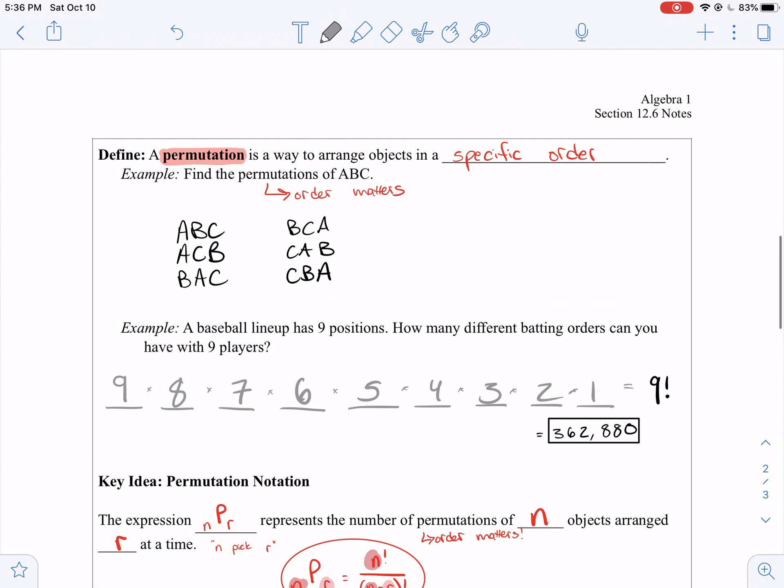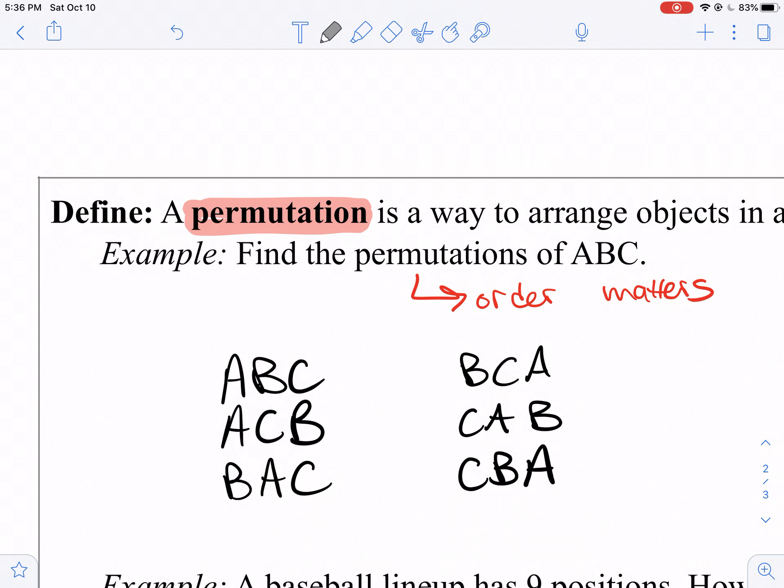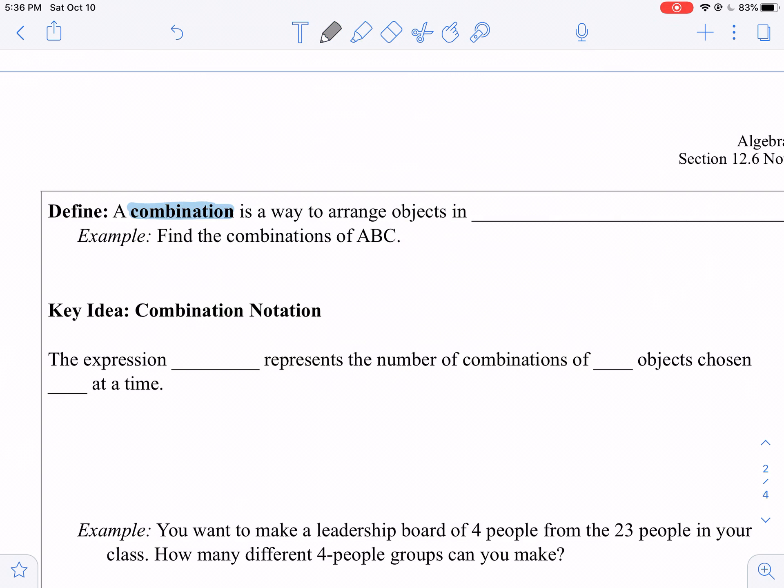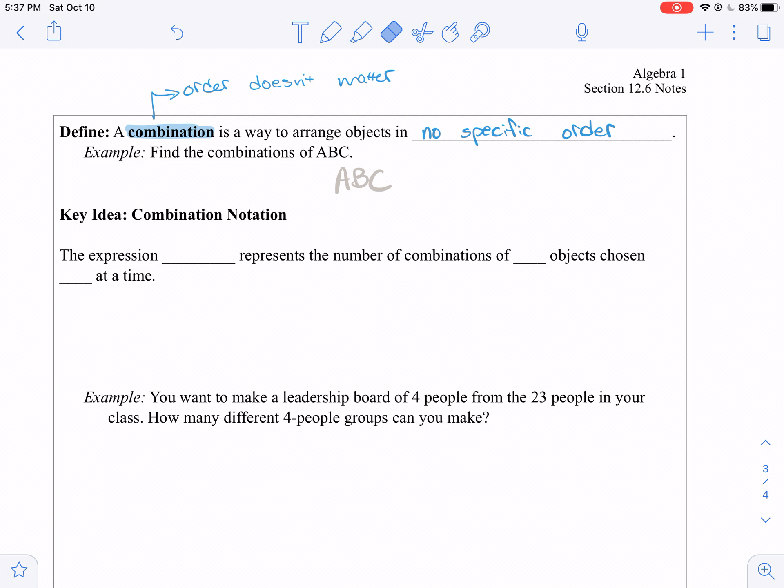So I said we have two more definitions. The first one was a permutation in which order mattered. And now we're going to learn about a combination. So a combination is when order does not matter. A combination is a way to arrange objects in no specific order. It's like if I want to pick the top three of something without placing them in an order. So the combinations then of ABC, if the order doesn't matter, there's only one combination of ABC. And that is ABC. Because that's the same thing as BCA's, the same thing as CAB's. It doesn't matter how we arrange them. It's all the same.